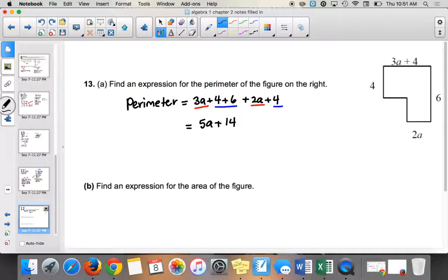So we have plus 14. So the perimeter is not too bad. You just add up all the sides. But the area is a little bit harder.